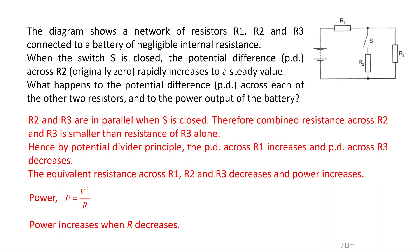R2 and R3 are in parallel when S is closed. Therefore, the combined resistance across R2 and R3 is smaller than the resistance of R3 alone.